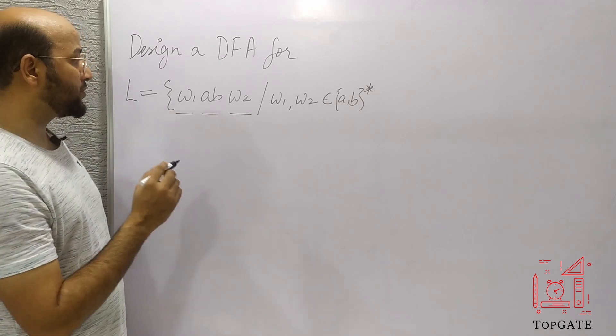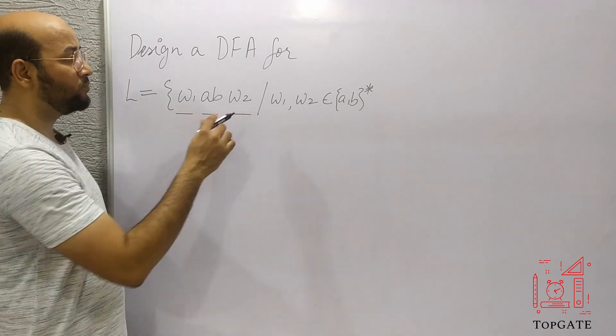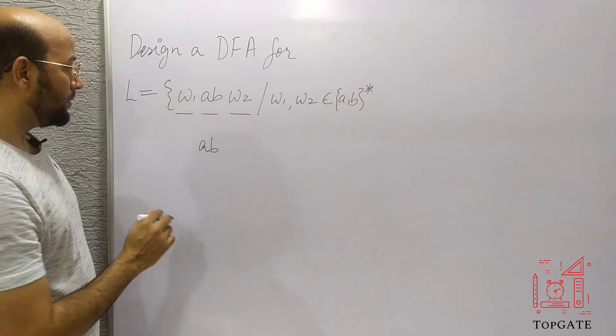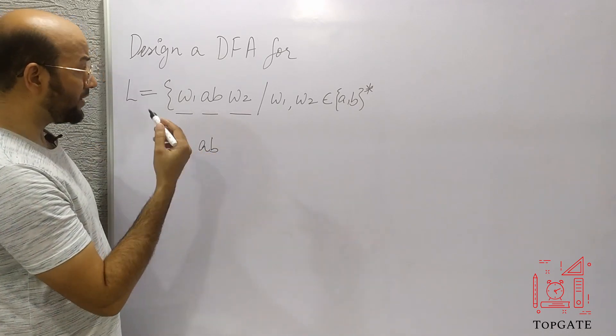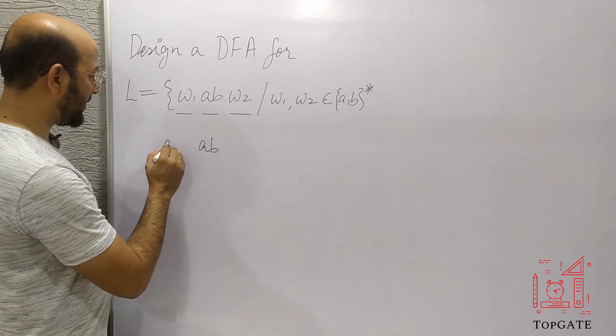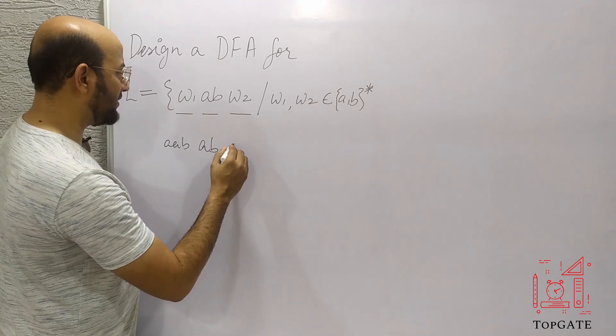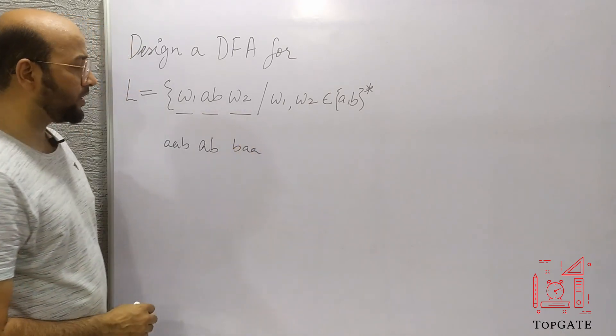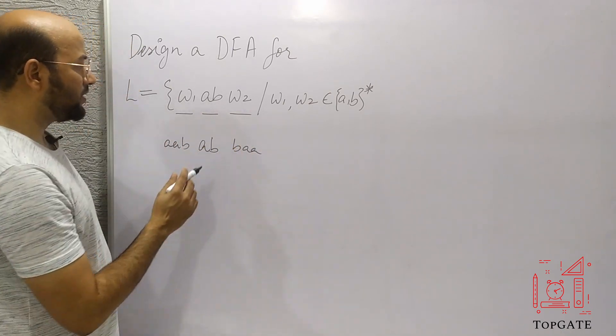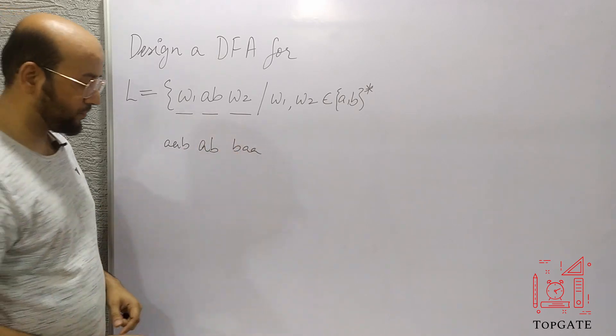So the shortest possible string in this case will be AB only, that is when W1 and W2 both are nulls. But if W1 and W2 both are not nulls, we can have anything here, like we can have A, A, B here, and after AB again can have anything B, A, A here. So we have to accept any string which can accept these kind of strings.